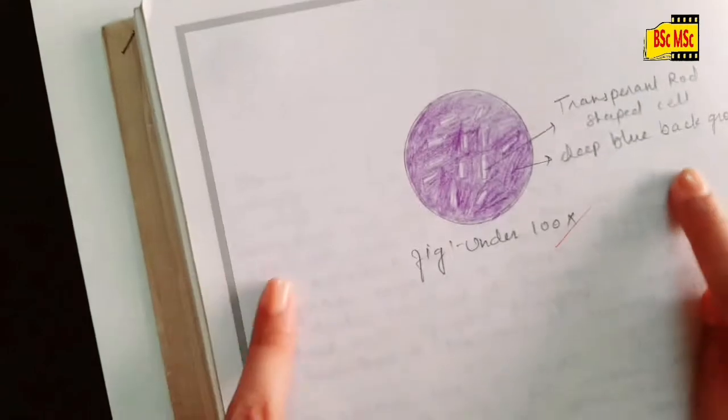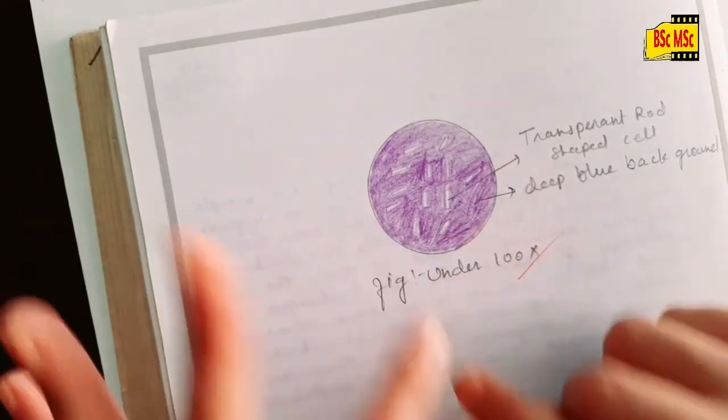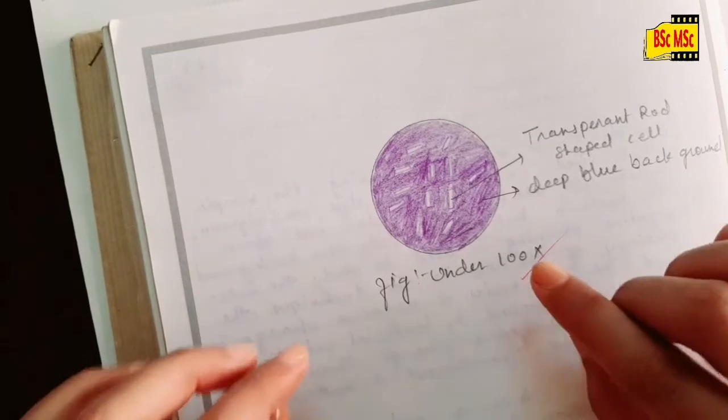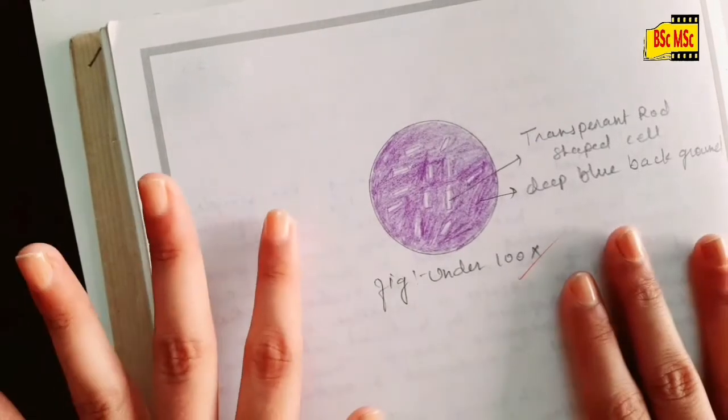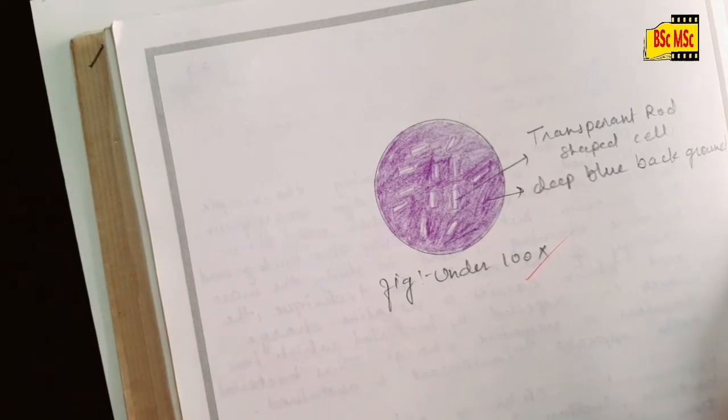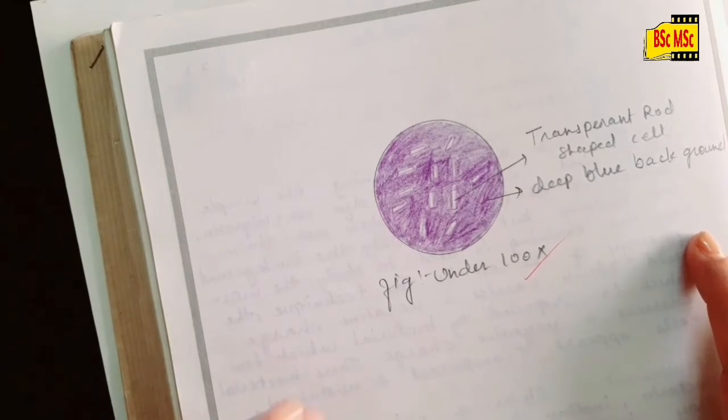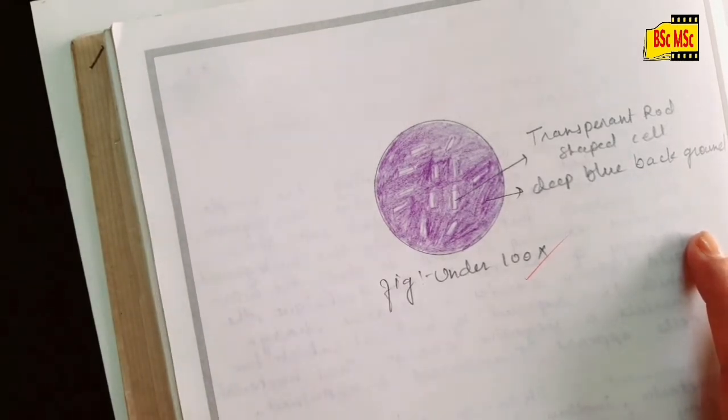See, this is my observation. When you observe it under 100x under oil immersion, you'll be able to see the transparent bacterial cell. This negative staining we basically do to see the morphology of the bacterial cell - how long it is, what is the shape of the bacterial cell.